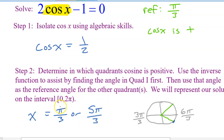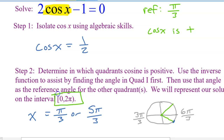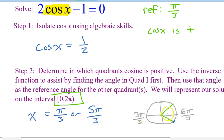We are being asked to find all solutions on the interval between zero and two pi — that means one spin around the unit circle. You need to list off any solutions you can possibly find between zero and two pi. All of them need to be listed out.